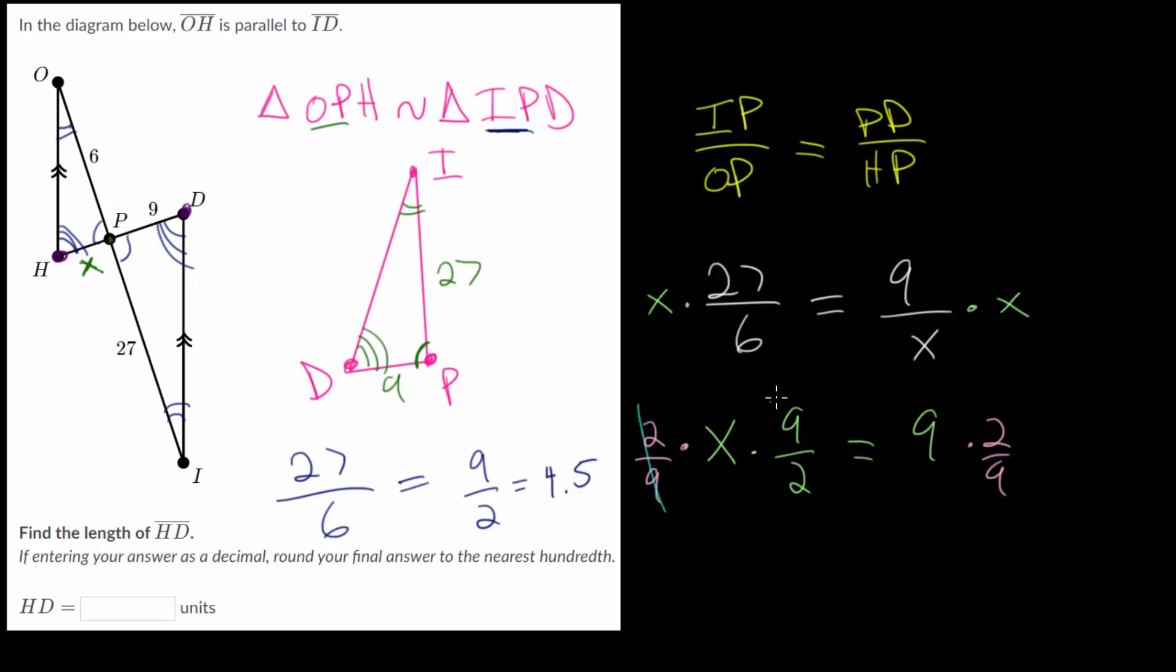these will cancel each other out. If you just multiply straight across with those fractions, you get 18 over 18, which is just 1. So X is 9 times 2 divided by 9. And the 9s will cancel out. 9 divided by 9 is 1. So we just get 2.